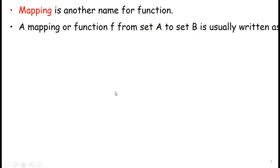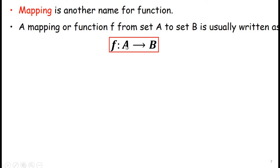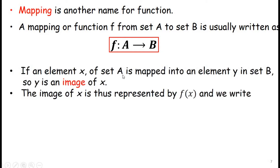Mapping is another name for a function. A mapping or function f from set A to set B is usually written as f: A → B, read as 'function f mapping A to B.' If an element x of set A is mapped to an element y in set B, then y is the image of x, represented by f(x), and we write y = f(x).